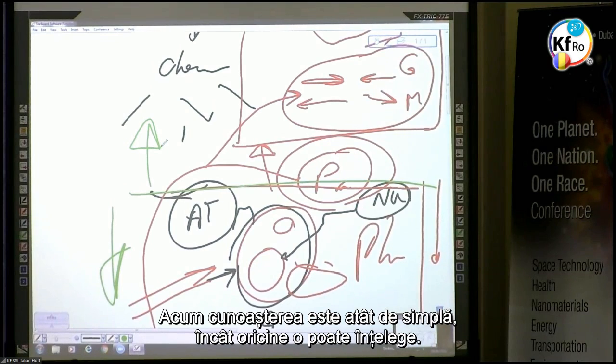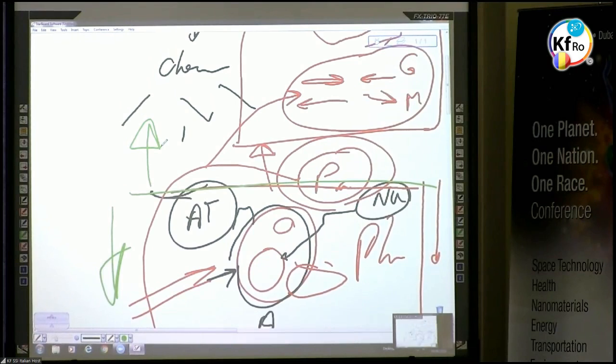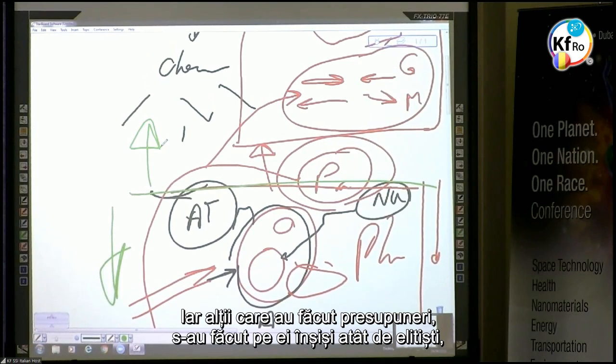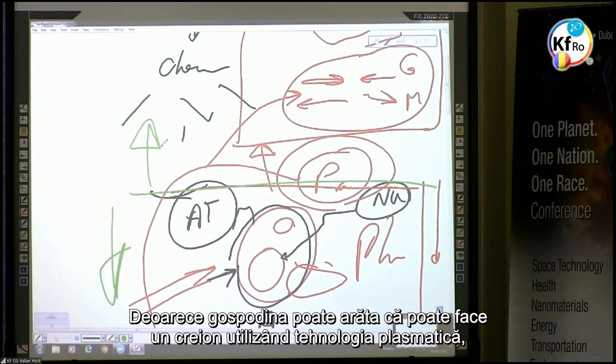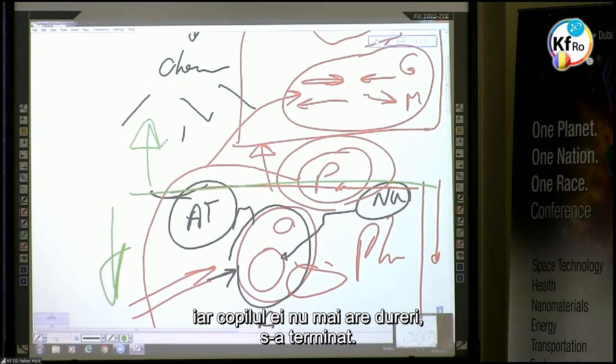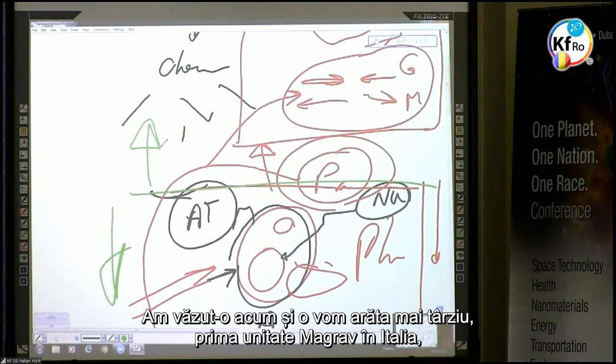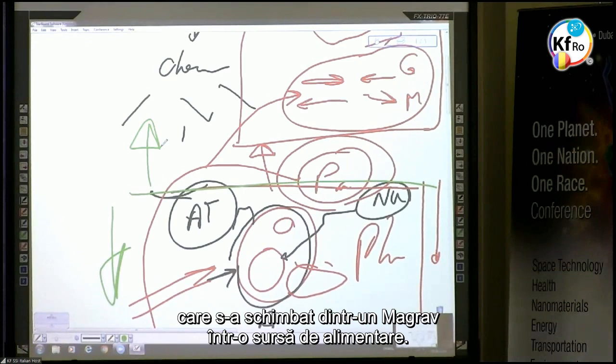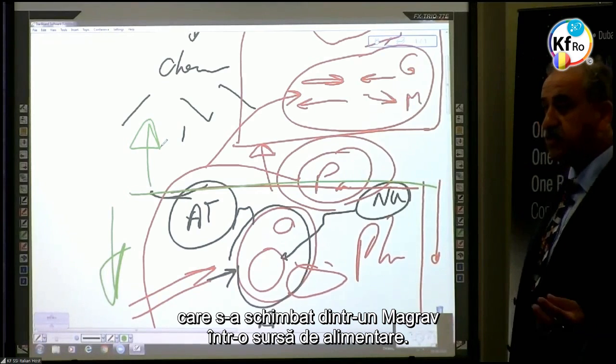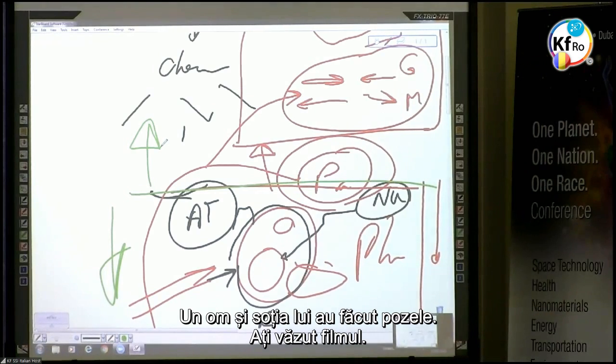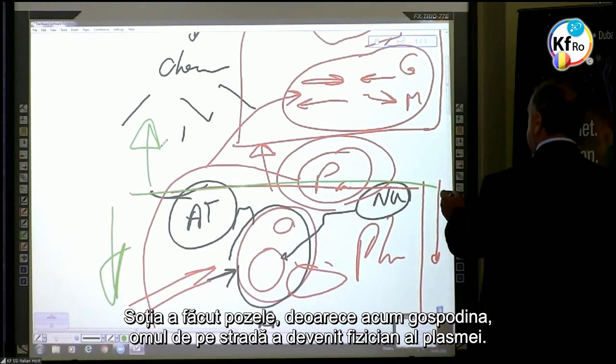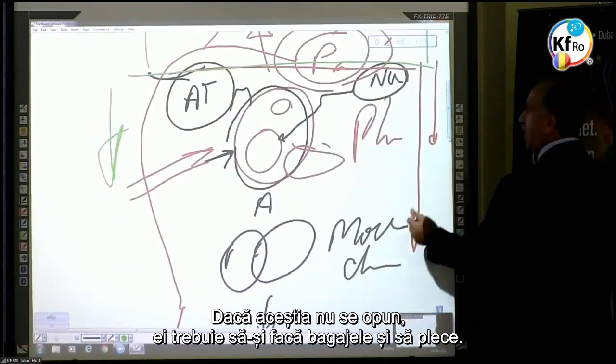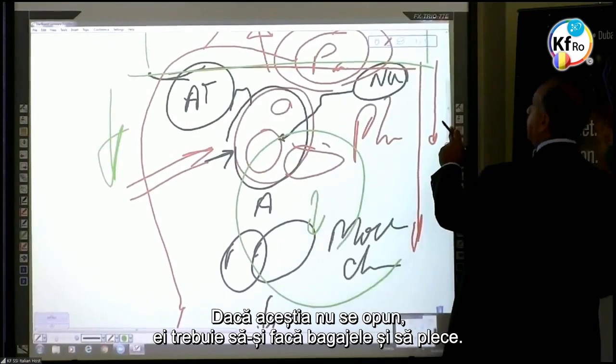Because a housewife can show I can make a pen, use the plasma technology, and my child doesn't have a pen, it's finished. We see now, we show later on today, the first MaGrav unit in Italy which has changed from a MaGrav to a power supply, where a man, household, and the wife takes the pictures. The wife takes the pictures because now a housewife, a man on the street, has become a plasma physicist. If this lot don't oppose it, they have to pack up and leave.